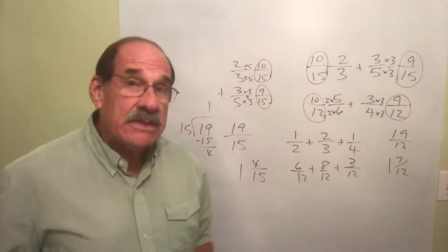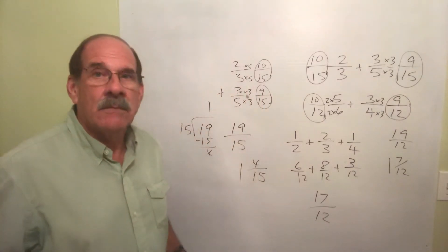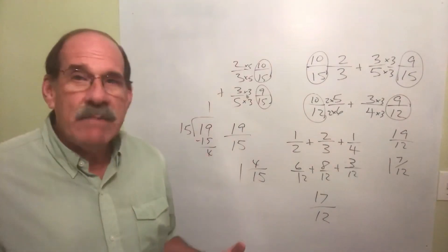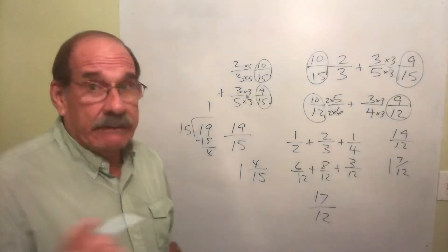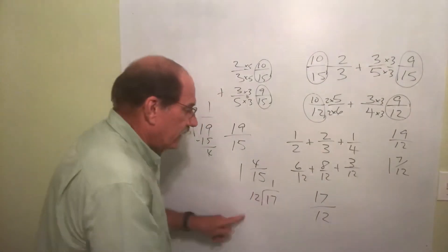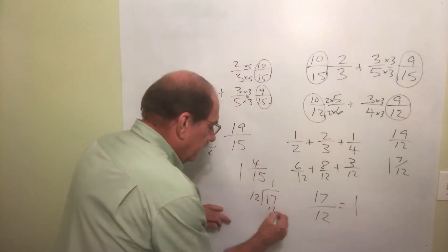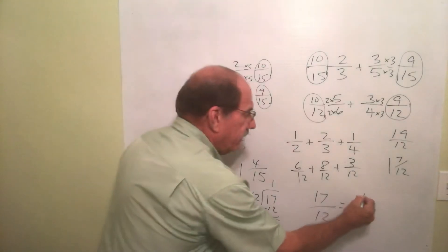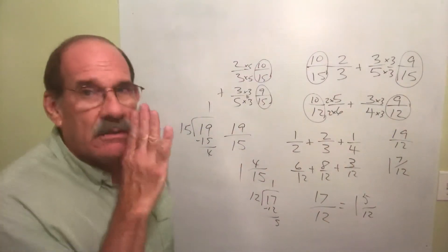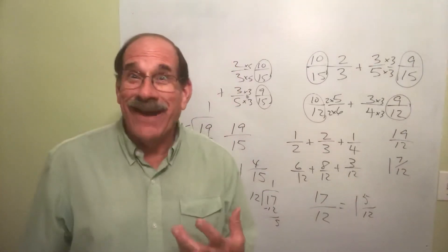So now it's 6/12 plus 8/12 plus 3/12. Same rule — since we've got the same denominator, add the top numbers: 6 plus 8 plus 3 is 17. That's an improper fraction, so convert: 17 divided by 12, 12 goes into 17 one time, multiply 1 times 12 is 12, subtract, remainder of 5. Keep the same denominator — answer is 1 and 5/12. Double check: 1 times 12 is 12, plus 5 is 17. 17/12 — correct.